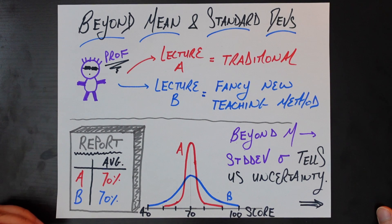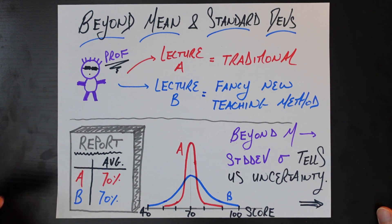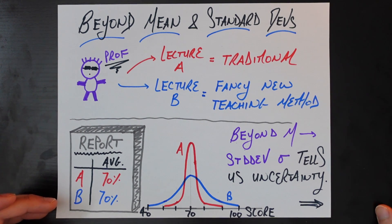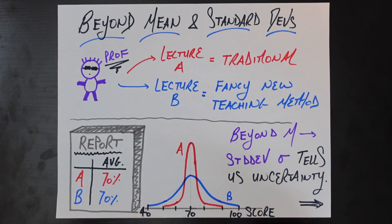So let's say the report comes back and you find that the average score for the students in lecture A was 70% and the average score for the students in lecture B was also 70%. Based on that information alone, you might conclude that these two teaching methods were equally good — there's nothing more to talk about here. And in fact, when you think about any statistic in the real world, almost any statistic you hear about on the news or read about in an article, this is pretty much where they stop.